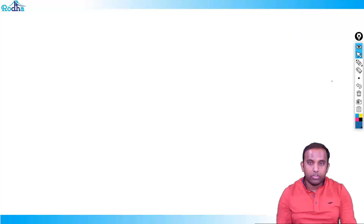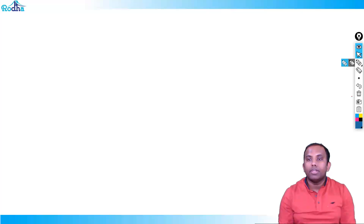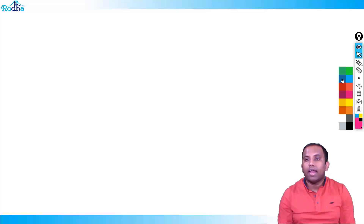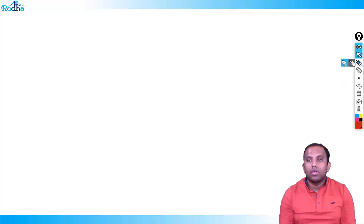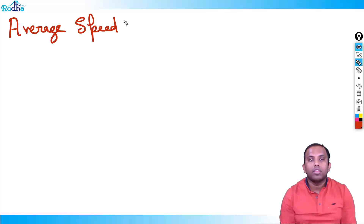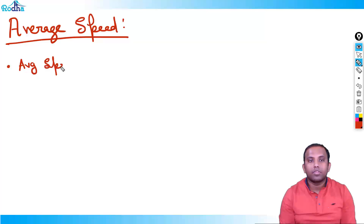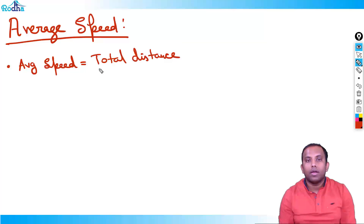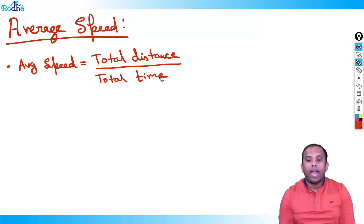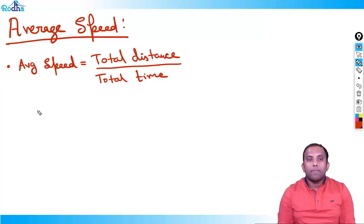Now let's discuss the concept of average speed. Average speed = total distance / total time. We'll discuss a few cases to understand this better, starting with when distances are covered in equal parts.